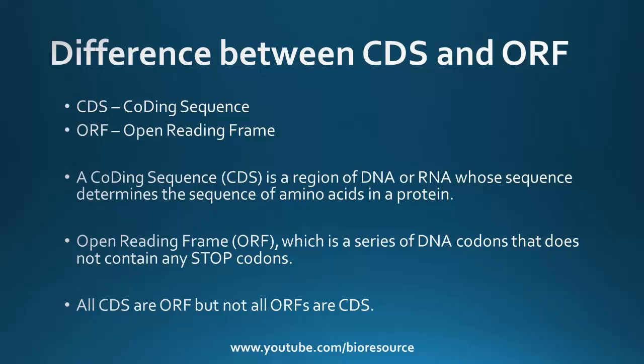Let's see the difference between coding sequence and ORF. CDS means coding sequence and ORF means open reading frame. A coding sequence is a region of DNA or RNA whose sequence determines the sequence of amino acids in a protein. Whereas an open reading frame is a series of DNA codons that does not contain any stop codons. All coding sequences are ORFs, but not all ORFs are CDS. In prokaryotes, ORF and CDS are the same because there are no introns in the prokaryotic system. But in the eukaryotic system, not all ORFs are CDS.